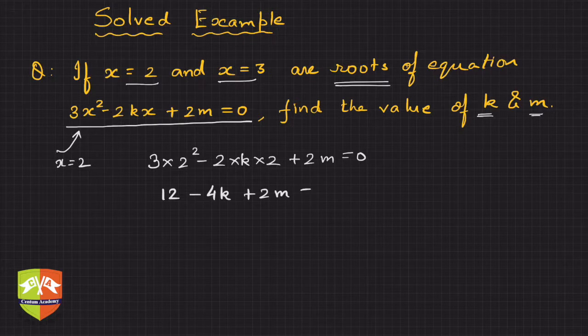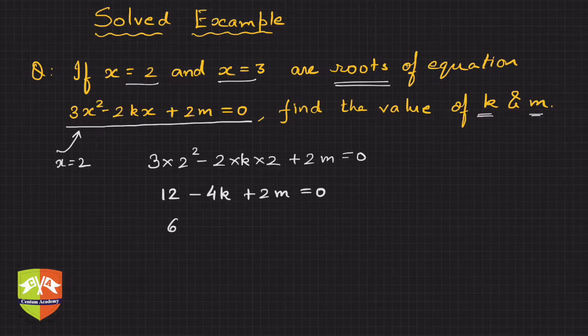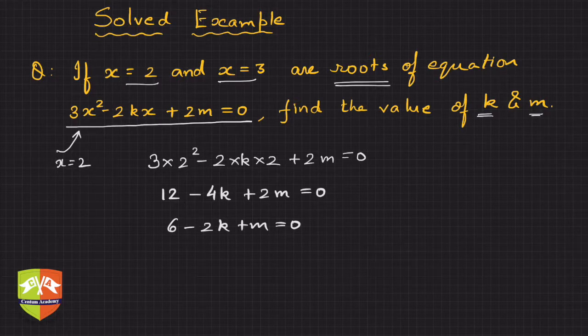If you see, we can eliminate a 2 from the entire equation. 2 gets cancelled, so 6 minus 2k plus m equals 0, or simplifying I can write 2k minus m equals 6. This is the first equation.